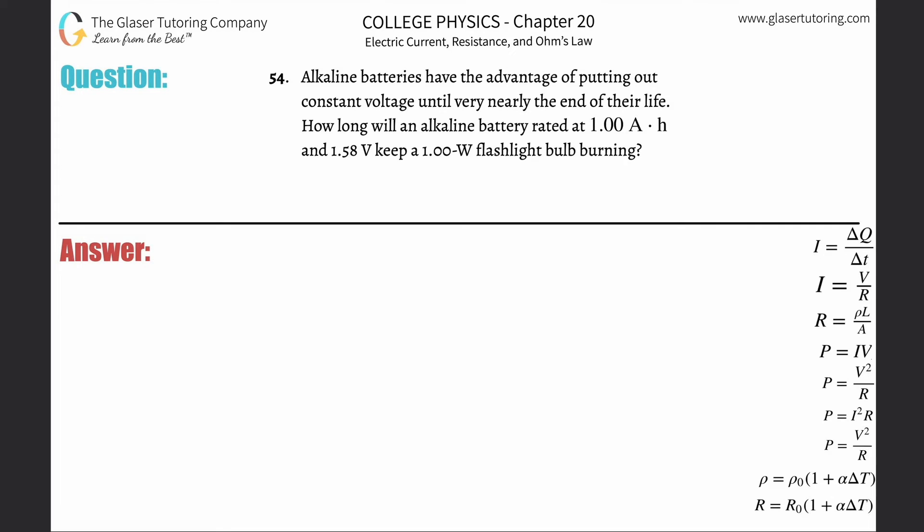Number 54. Alkaline batteries have the advantage of putting out constant voltage until very nearly the end of their life. How long will an alkaline battery rated 1 amp hour and 1.58 volts keep a 1 watt flashlight bulb burning?